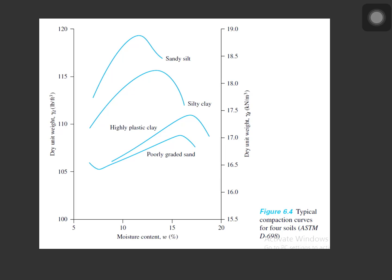According to ASTM D698, we have the poorly graded sand, highly plastic clay, silty clay, and sandy silt. From the figure, we can see that the sandy silt have a greater amount of dry unit weight at a lesser amount of the moisture content, thus making it a very good subgrade material.